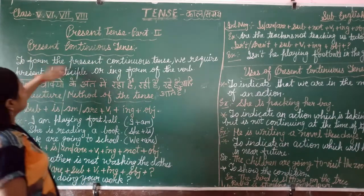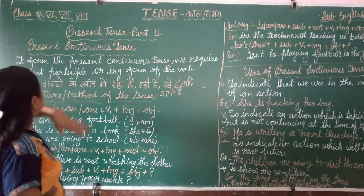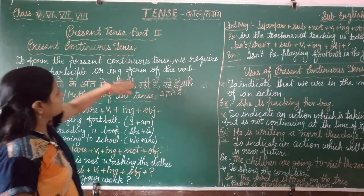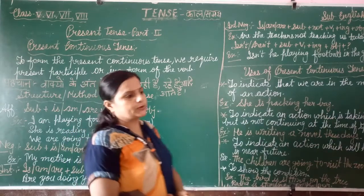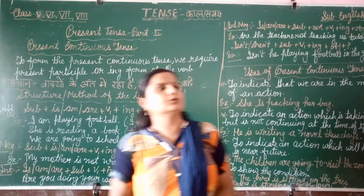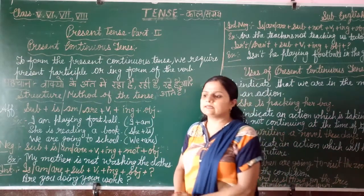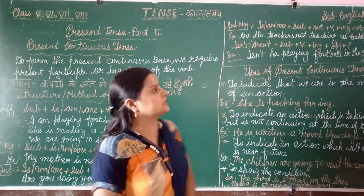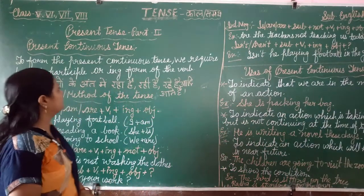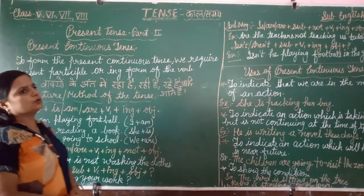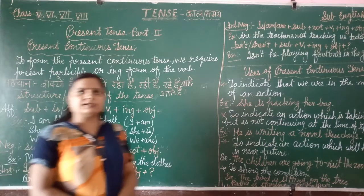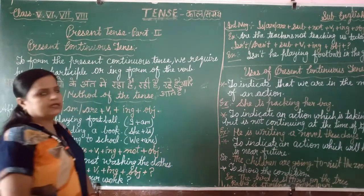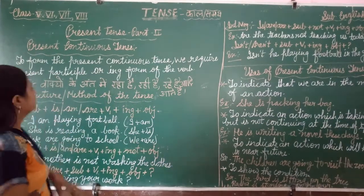To form present continuous tense we require present participle or ING form. Students, when we use continuous tense we always use ING form. It means we use simple present tense form, we use V1 and also add plus ING in this tense.